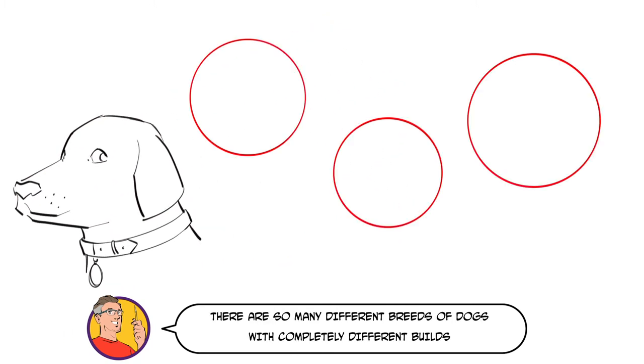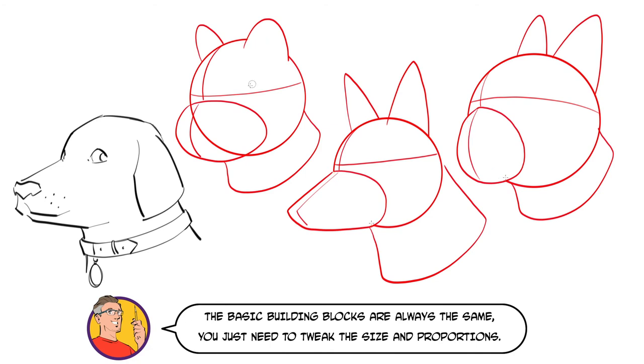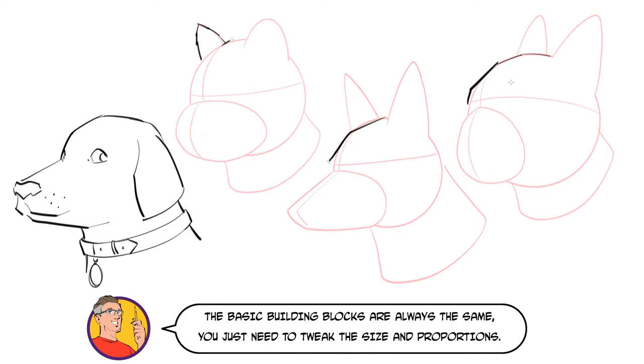There are so many different breeds of dogs with completely different builds but whether you're drawing a Labrador, a Westie, an Alsatian or a French Bulldog the basic building blocks are always the same. You just need to tweak the size and proportions.